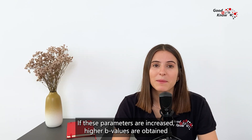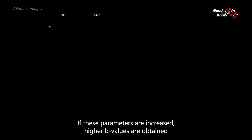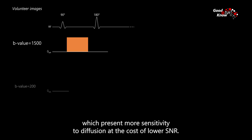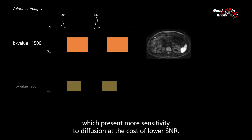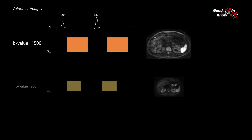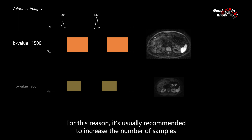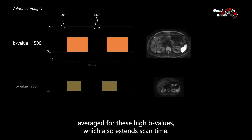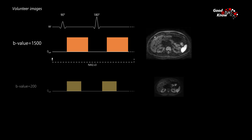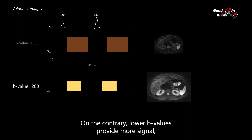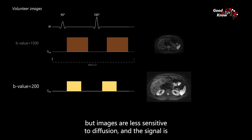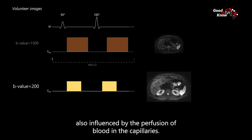If these parameters are increased, higher b-values are obtained, which present more sensitivity to diffusion at the cost of lower SNR. For this reason, it's usually recommended to increase the number of samples averaged for these high b-values, which also extends scan time. On the contrary, lower b-values provide more signal, but the images are less sensitive to diffusion, and the signal is also influenced by the perfusion of blood in the capillaries.